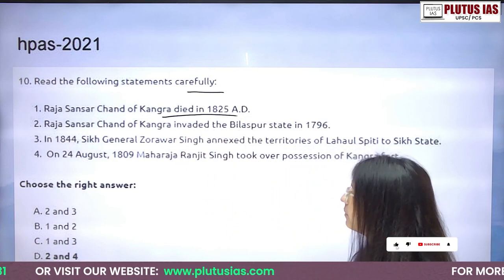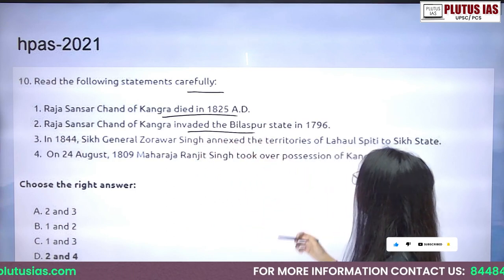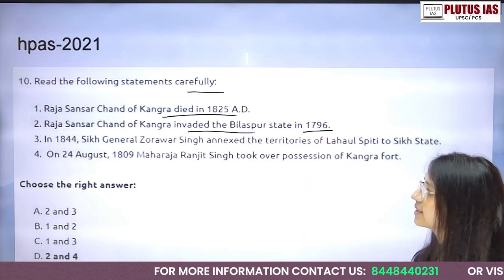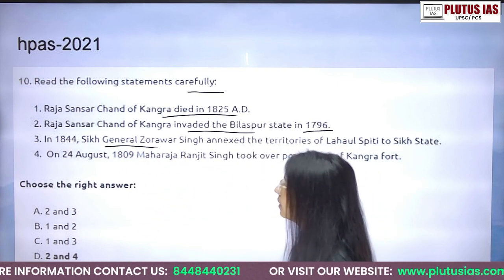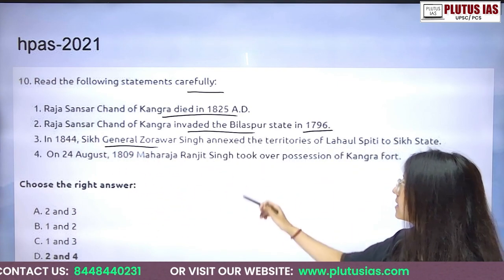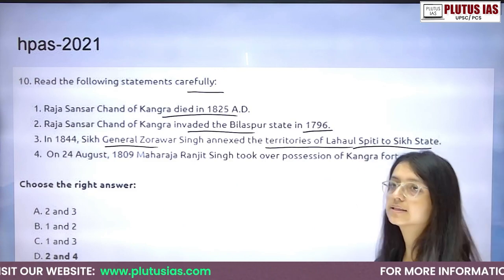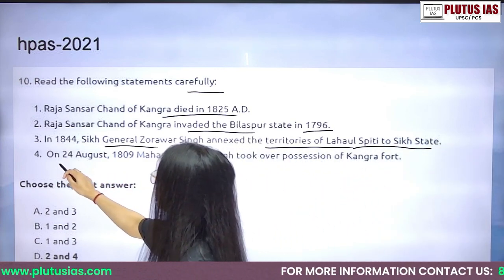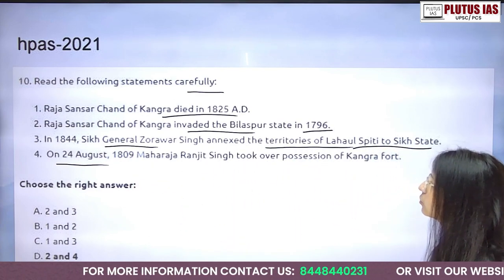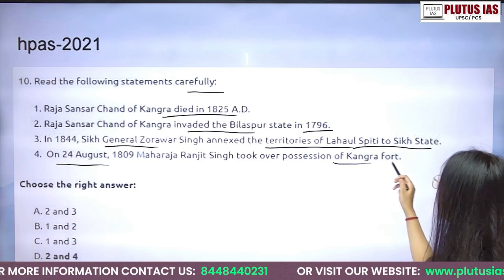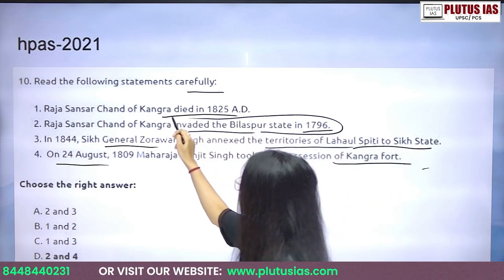The Raja Sancharachand of Kangra invaded the Bilaspur state in 1796. In 1844, Sikh general Zorawar Singh annexed the territory of Lahaul-Spiti to the Sikh state. On 24 August 1809, Maharaja Ranjit Singh took over possession of the Kangra state. There is a statement asked related to this portion.